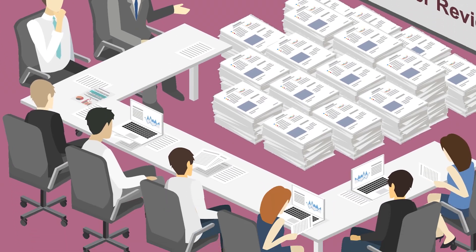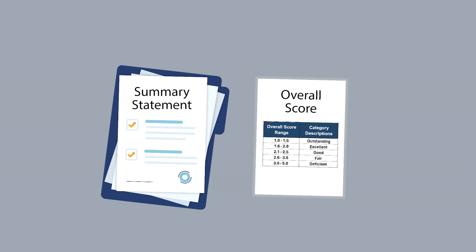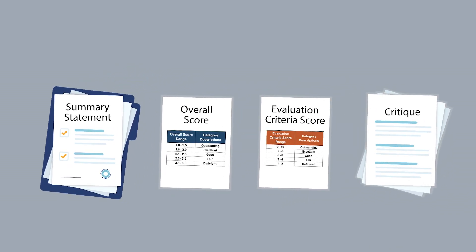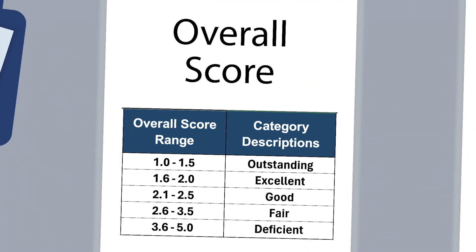The outcome from peer review is a summary statement. This statement includes a score for overall merit, individual evaluation scores, and a written critique of the strengths and weaknesses of the application. If relevant, discussion notes from the live discussions during the peer review meeting may also be captured. The overall score represents an overall assessment of the application merit. Scores range between one and five, with one representing the highest merit and five the lowest merit. Scores are averaged among all peer review panel members and are reported on the first page of the summary statement.